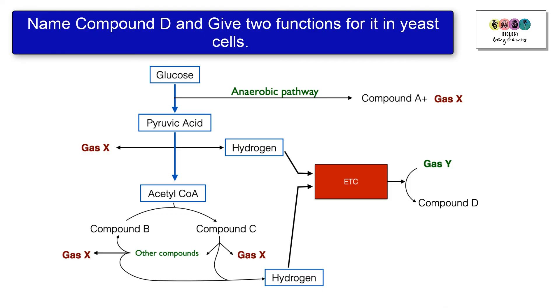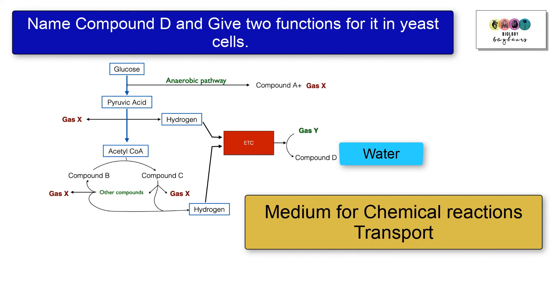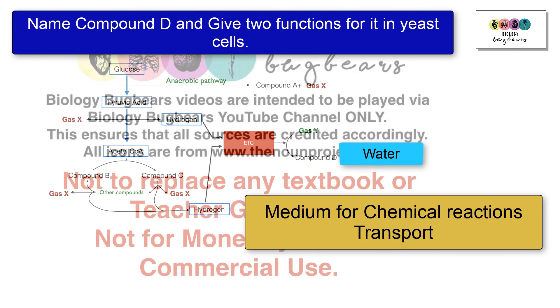Name compound D and give two functions for it in yeast cells. Well, we know compound D has to be water because it's at the end of the electron transport chain there in the diagram, and we know that oxygen combines with the electrons that pass over the electron transport chain and protons to form water. Give two functions of water. Well, it's the medium in which chemical reactions can take place, and it's also used for transport.